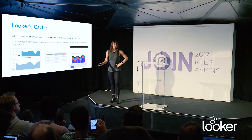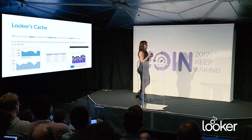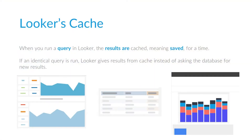We're going to start by talking about what Looker's cache is and what it's used for. When you run a query in Looker — whether that's from a scheduled report, the explore page, a dashboard, the API, anywhere — the results of that query go into Looker's cache. When that same query is run again, so long as the cache is still valid, you'll be served those cached results instead of Looker going back to your database. That lowers the load on your database and makes results come back to your users faster, provided that query has been run before.